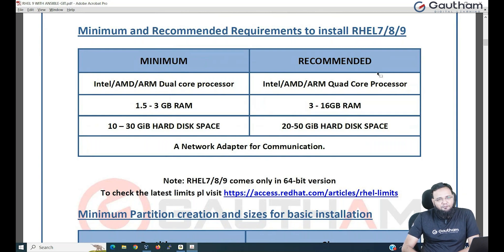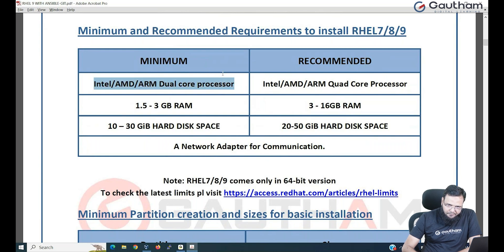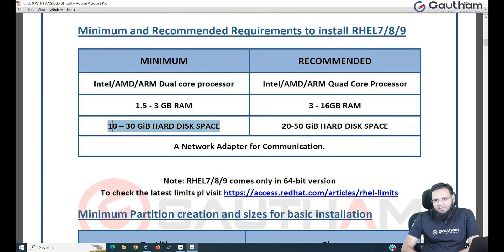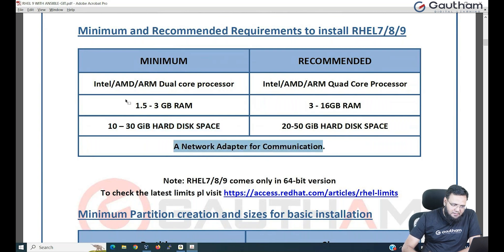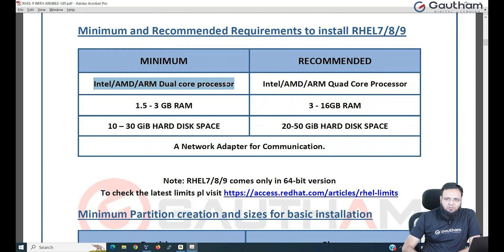For installation, we need to look at three things. First is the processor, second is the RAM, and third is the hard disk space. And fourth, we need to have a network adapter. The CPU required is Intel, AMD, or ARM — any platform — with a dual core CPU as the minimum.